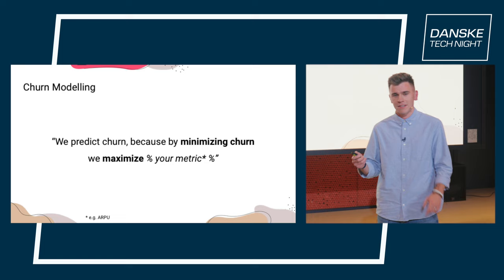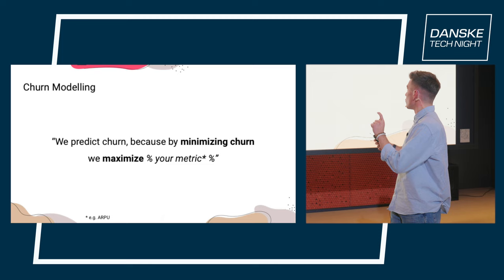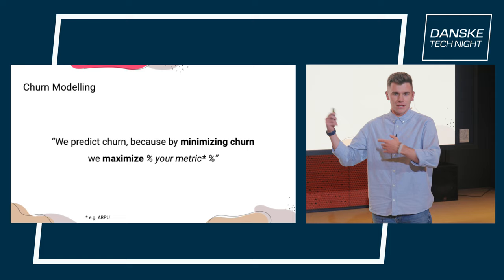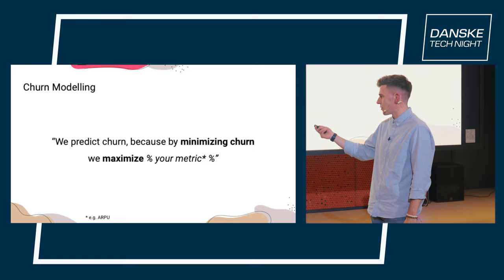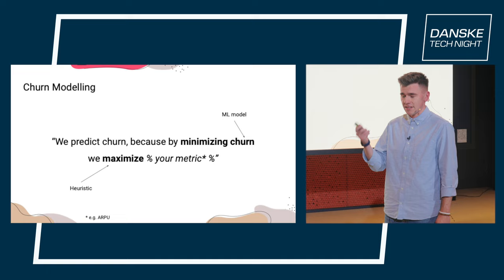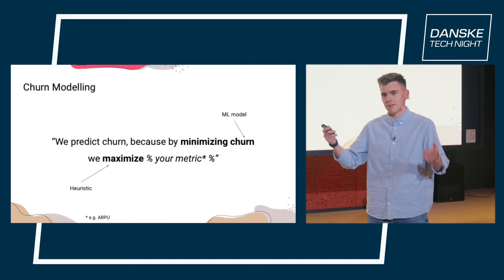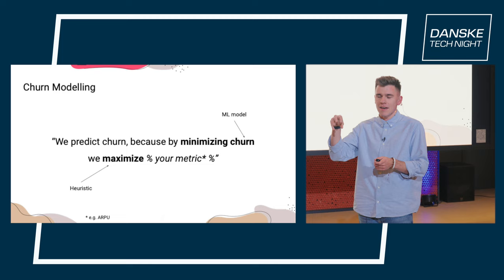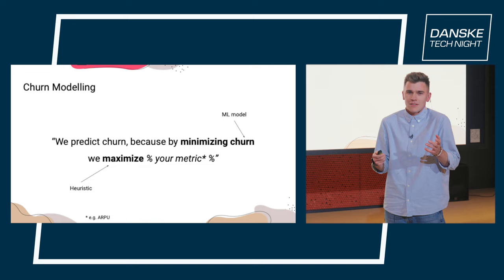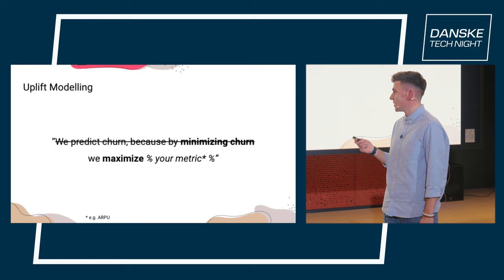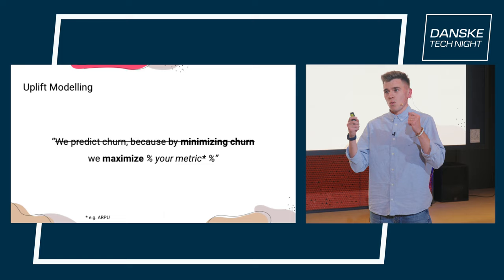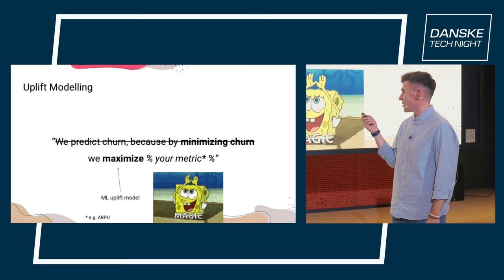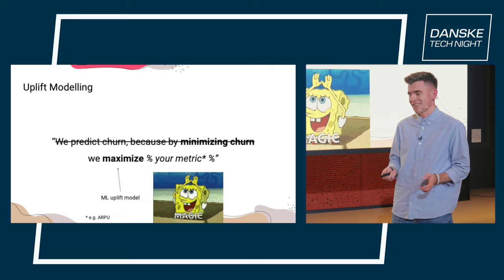In regular churn modeling, the default mindset is: we build the churn model to minimize churn, because we believe that by minimizing churn we will maximize — insert your metric — retention, or in our case, revenue per user. But data scientists are usually very good at building the model, yet maximizing any metric using the model's output is still a human heuristic. That's why people invented uplift modeling, which is a paradigm shift where you say: we want to maximize this metric, period. For that, we build a special model called an uplift model.